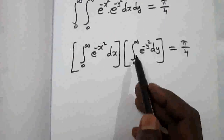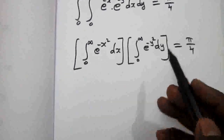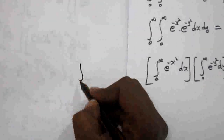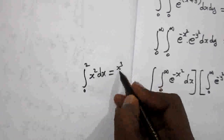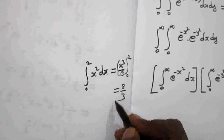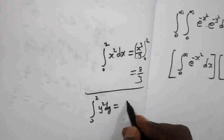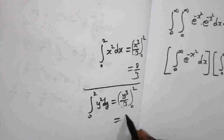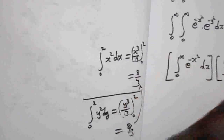Notice that both integrals are the same — only the variable names differ. These variables x and y are called dummy variables. For example, the integral from 0 to 2 of x squared dx equals 8/3, and similarly the integral from 0 to 2 of y squared dy also equals 8/3 — same answer, different variable. These two variables are called dummy variables.